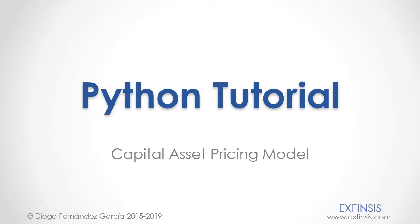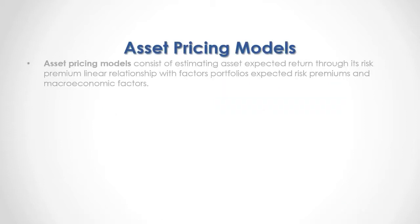Python Tutorial: Capital Asset Pricing Model. Asset pricing models consist of estimating asset expected return through its risk premium linear relationship with factors, portfolio's expected risk premiums, and macroeconomic factors.